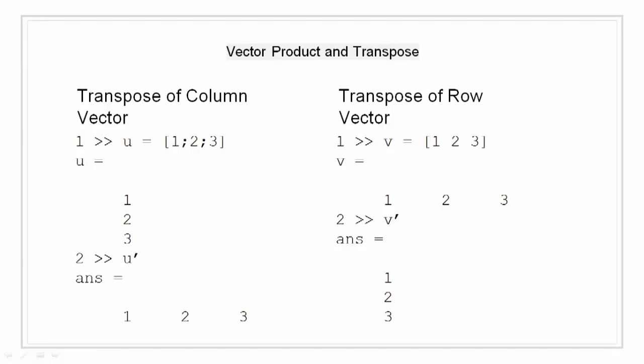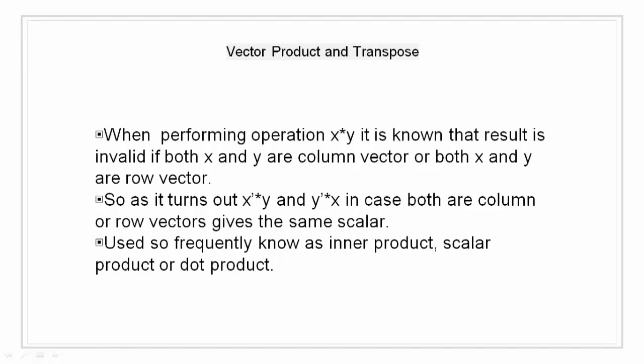I want to highlight few known points about the vector product. It is a known fact that while performing multiplying operator on vector that is x into y, the result is invalid in cases when both x and y are column vector and both x and y are row vector. So, in case both are same vector like say column vector, then the operation x transpose into y and y transpose into x produces the same scalar. This is quite frequently used thing and is commonly known as inner product, scalar product and dot product.